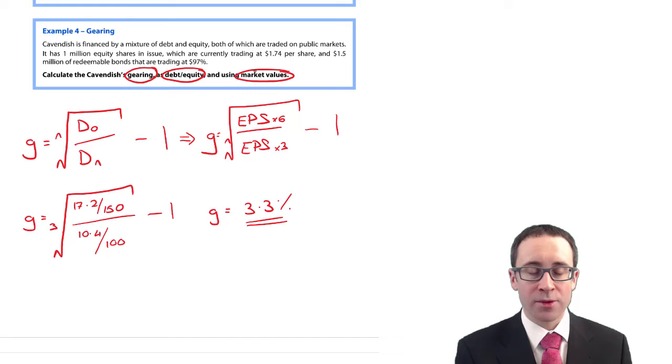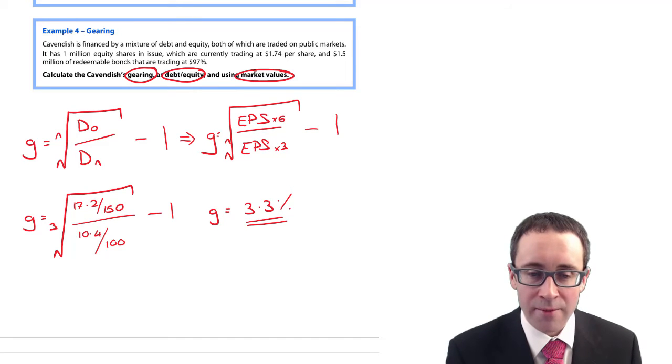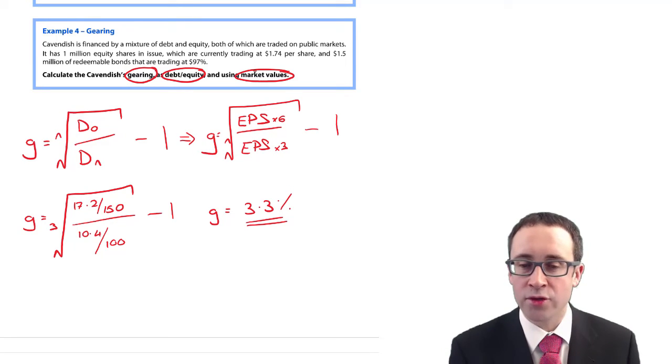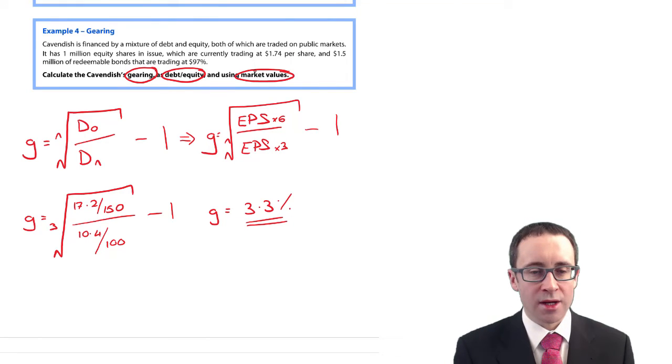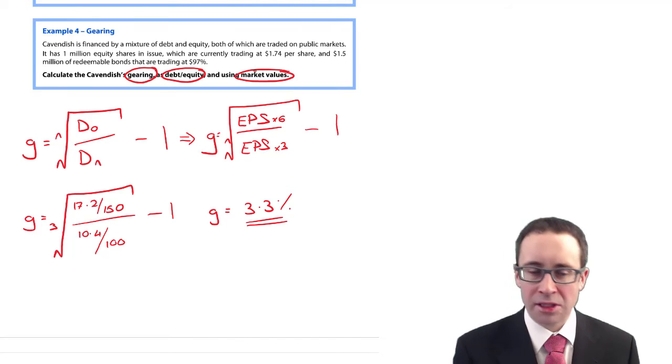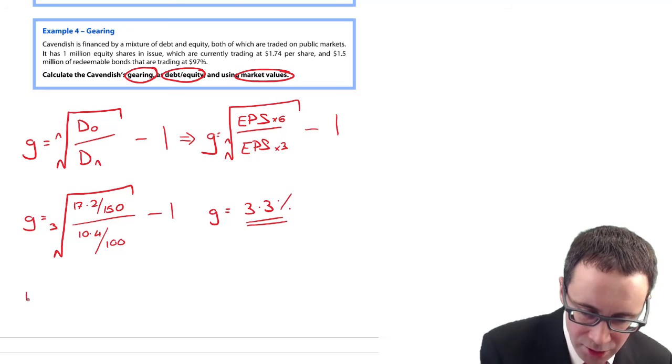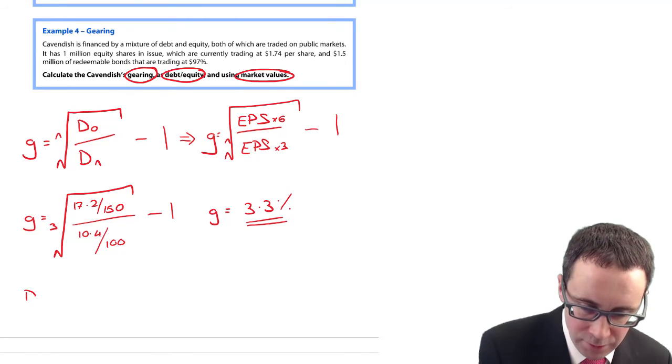Here, we're specifically told it is debt over equity and it wants us to use market values. Cavendish is financed by a mixture of debt and equity, both traded on public markets. It has 1 million equity shares currently trading at $1.74.